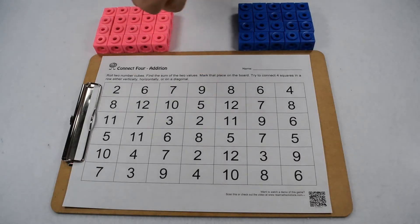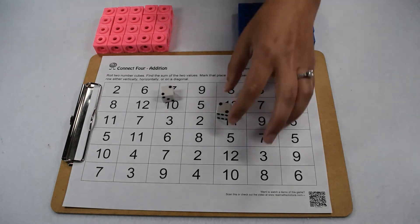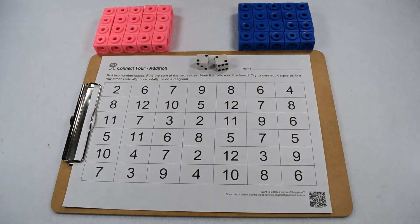Our pink player is going to be player one. They're going to take the dice and roll them. They rolled a two and a two. Two and two together is four, so they're going to take their pink marker and mark off one of the fours on the board.